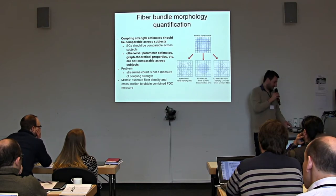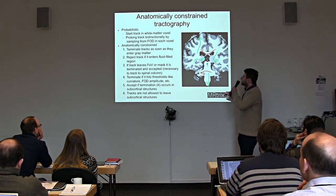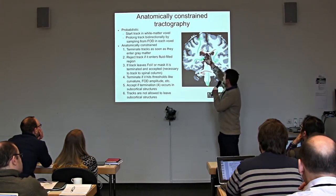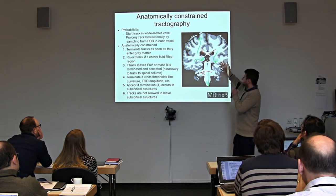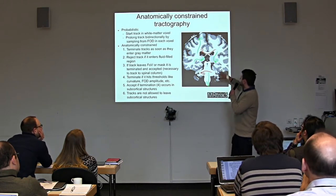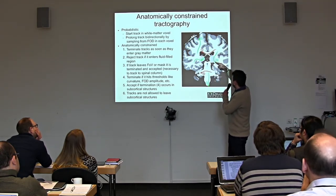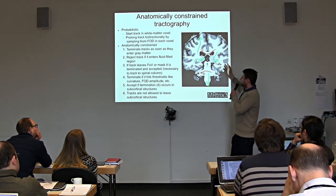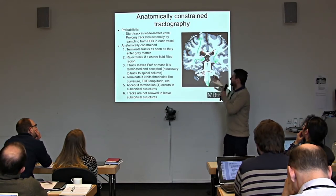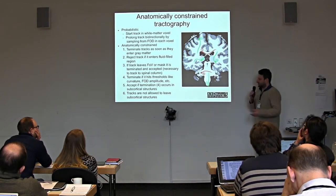Without anatomically constrained tractography, a tract might enter gray matter and leave it again, which is implausible. Tracts bending beyond certain thresholds are also terminated. There are many programs in MRtrix that do this pre-processing. The response function is the assumed DWI signal for a single coherently oriented fiber bundle — we look for voxels with high FA (fractional anisotropy). FA of zero means the same diffusion strength in all directions; the more directionally constrained, the more we can assume only a single coherently oriented fiber bundle is present. We average over many high-FA voxels to compute this response function, then use it for deconvolution.